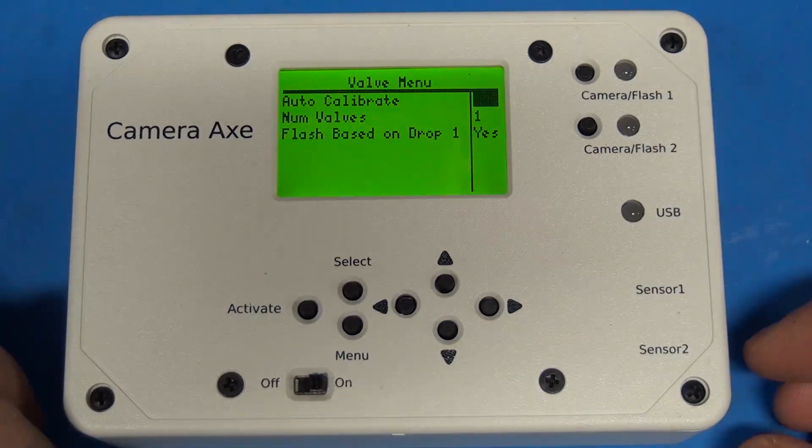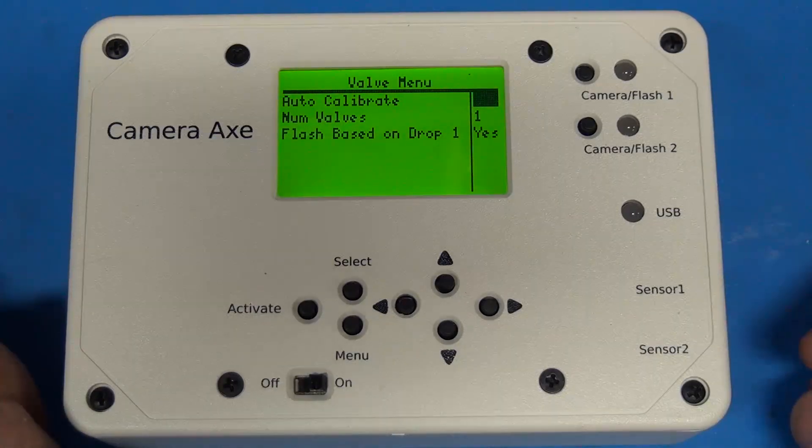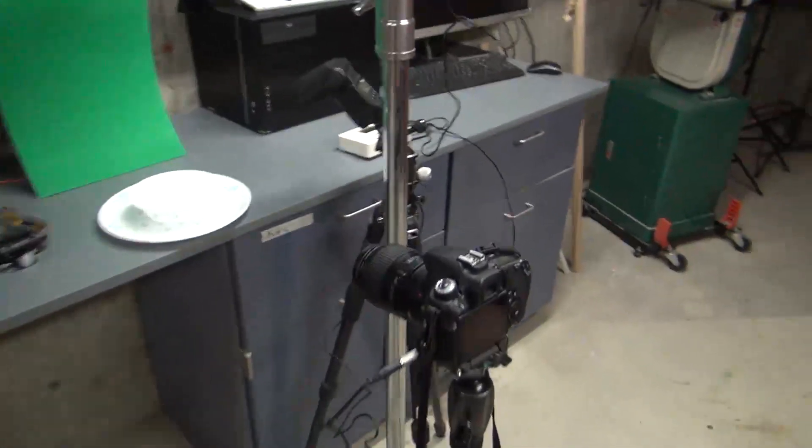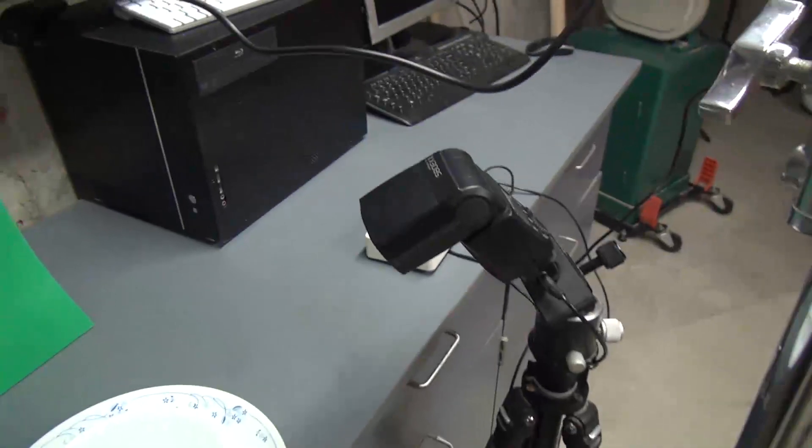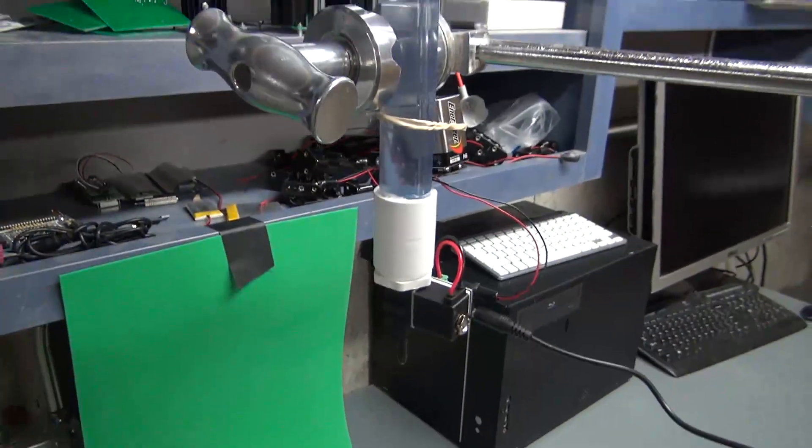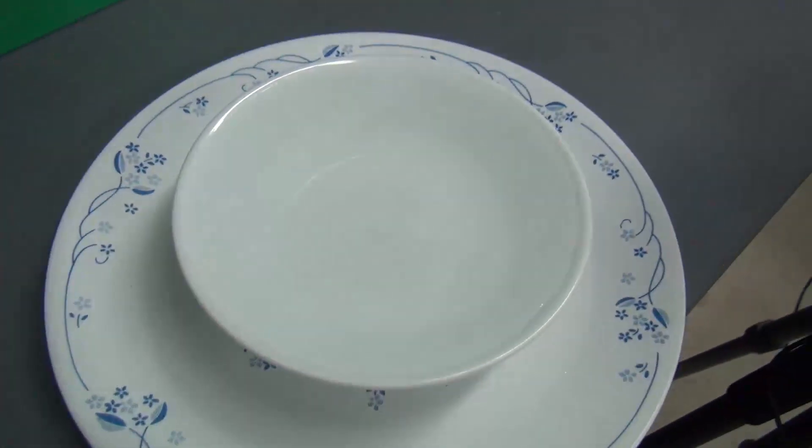Now let me show you how this works when it's connected up to the actual apparatus. So here's the setup I'm using. Right here's the camera, over here's the flash, the valve sensor, and down here's where I'm dropping the water into.